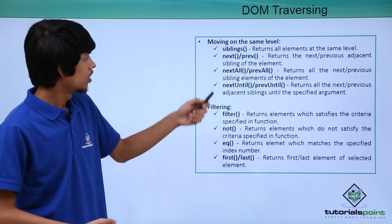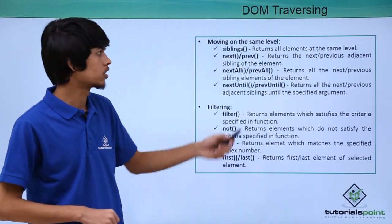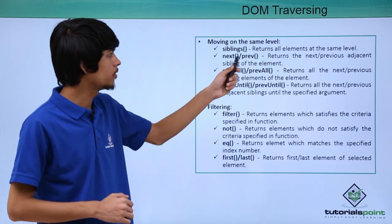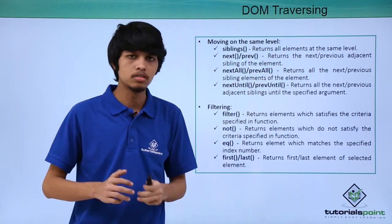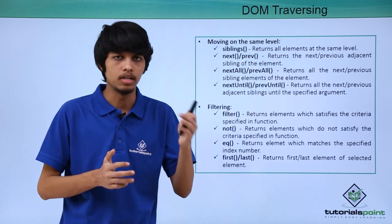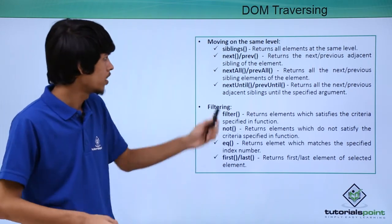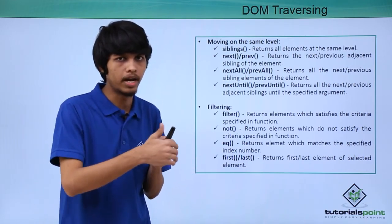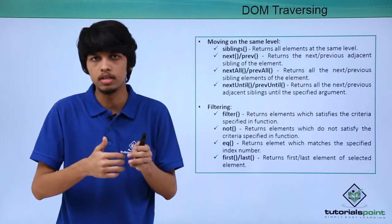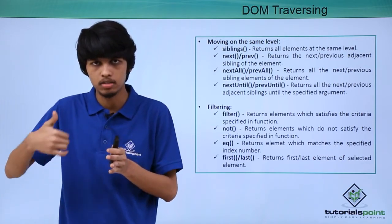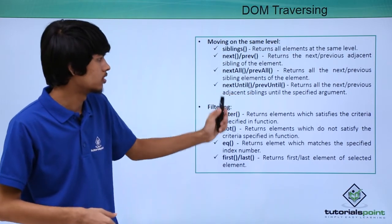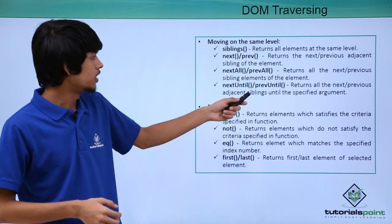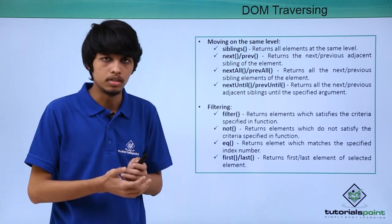Now let's see how we can move on the same level. The siblings() function returns all elements on the same level as the selected element. The next() and previous() methods return the adjacent sibling of that element — next returns the next adjacent and previous returns the previous adjacent. nextAll() and prevAll() return all following or preceding siblings respectively. nextUntil() and prevUntil() accept a condition as argument which decides which siblings are returned.